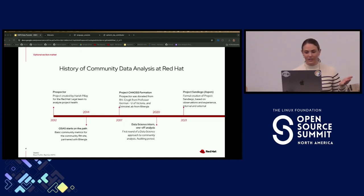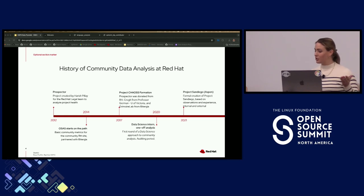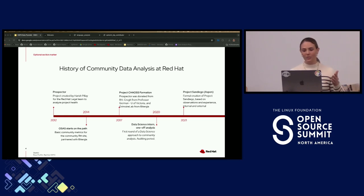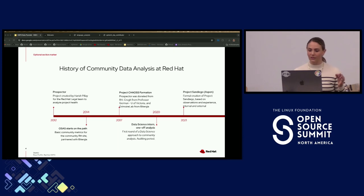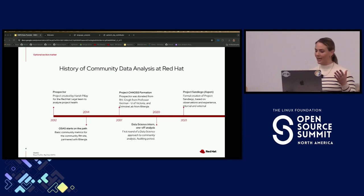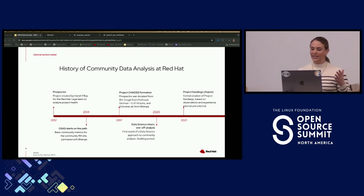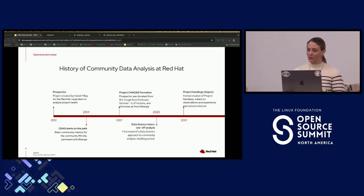Soon after the initial launch, Augur — a database platform from the University of Missouri — would also be added to the mix. Augur enables users to focus on data from GitHub and GitLab platforms, which can scale to tens of thousands of repositories, and years later would be used as a data source for Project Aspen.